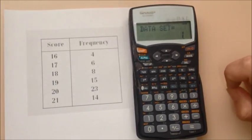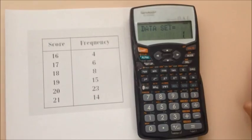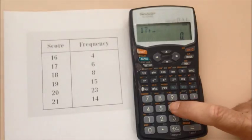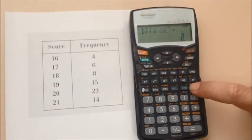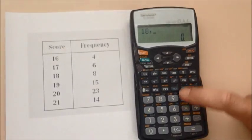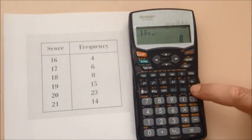And that's data set one means we put one group of data in. Now we keep going. 17 occurs, comma, six times, add it in. 18 occurs eight times, add it in.